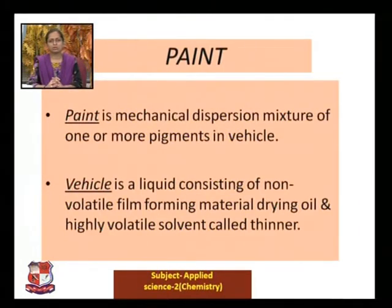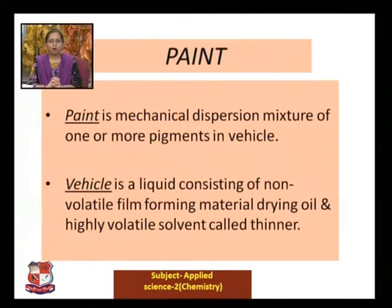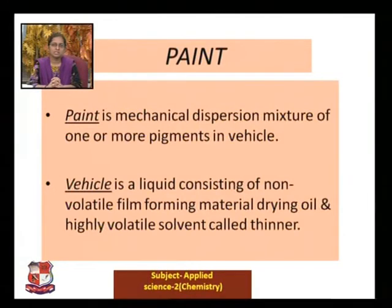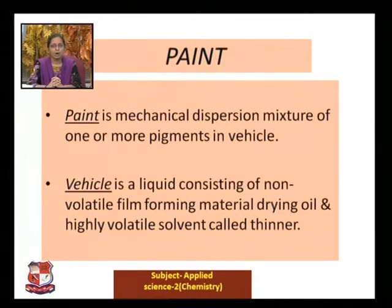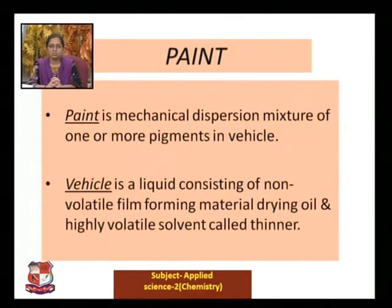Paint is one of the most important parts of today's life. What is paint? It is a mechanical dispersion mixture of one or more pigments in a vehicle. Paint is not described by a single word — it is basically composed of different chemical components: one or more pigments dissolved in the vehicle, which is our drying oil.